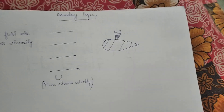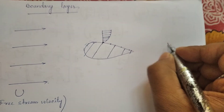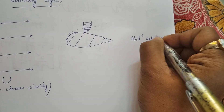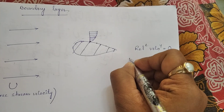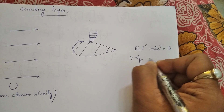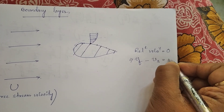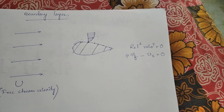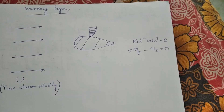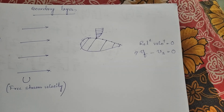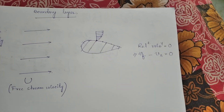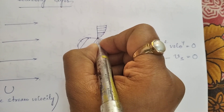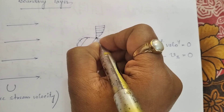The fluid sticking at the surface means the relative velocity at the surface is zero. The relative velocity is: velocity of the fluid minus velocity of the surface equals zero. So if the surface is at rest, the fluid velocity at the surface will be zero. If the surface is moving at a certain velocity, the fluid velocity at the surface will equal the velocity of the surface at that point.